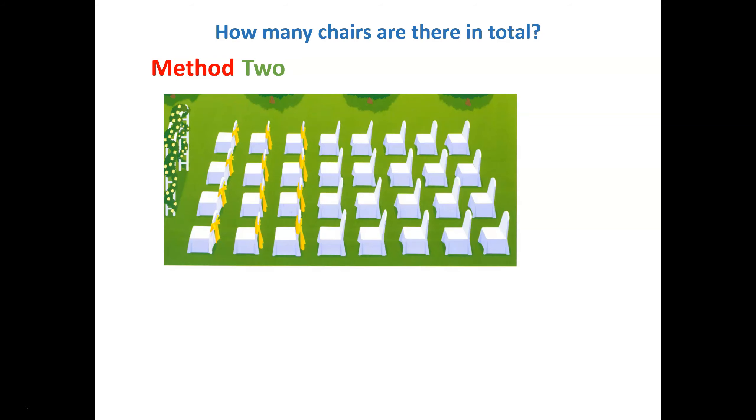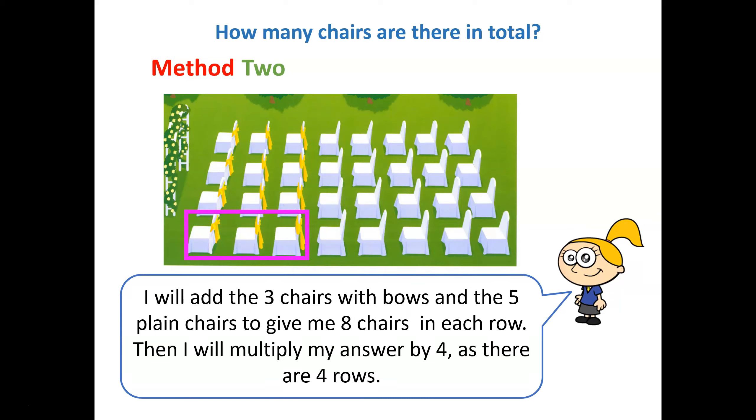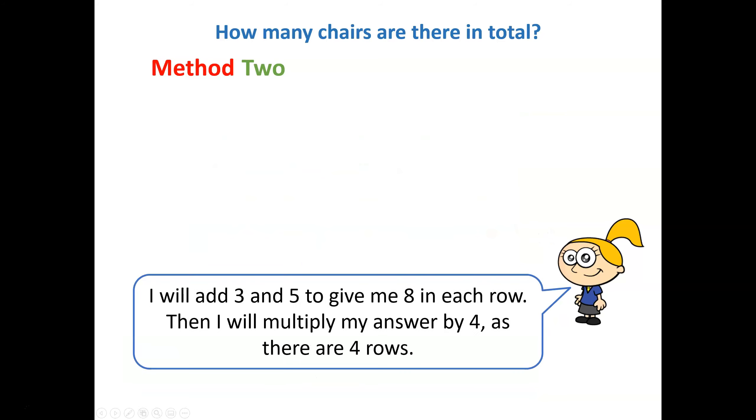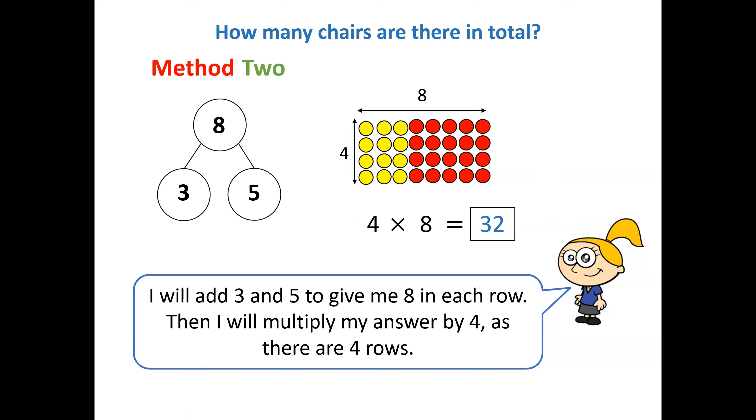How else might we have approached this problem using addition and multiplication? Well she says I will add the three chairs with bows and the five plain chairs to give me eight chairs in each row. Then I will multiply my answer by four as there are four rows. Let's represent this with counters. We can see from the array that there are eight counters in each row. That is what our whole part model is showing us. Eight can be partitioned into three and five. Three chairs with bows add five plain chairs is equal to eight chairs in each row. There are four rows, so we can now multiply to find the total: 4 times 8 and we know that is equal to 32.